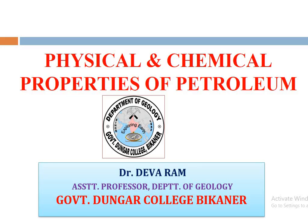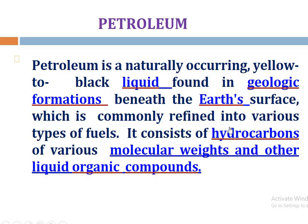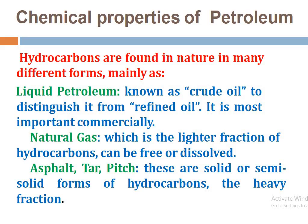Hello everyone, welcome back to my YouTube channel. Today, in the continuation of the petroleum geology lecture series, we are going to discuss the physical and chemical properties of petroleum. Petroleum is a naturally occurring yellow to black liquid found in geologic formations beneath the Earth's surface, which is commonly refined into various types of fuels. It consists of hydrocarbons of various molecular weights and other liquid organic compounds.